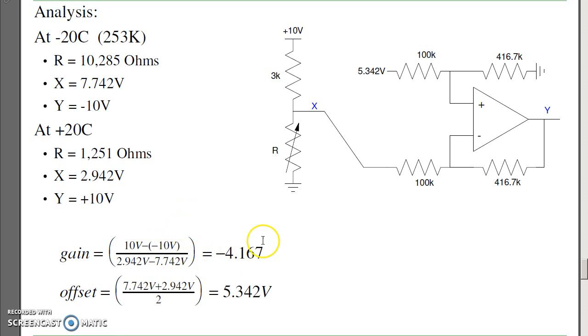The gain I want is change in output over change in input. I want a gain of 4.1, much less than what we had before with the RTDs. That's an advantage of a thermistor. I need lower gains. Here I have a gain of 4.1.